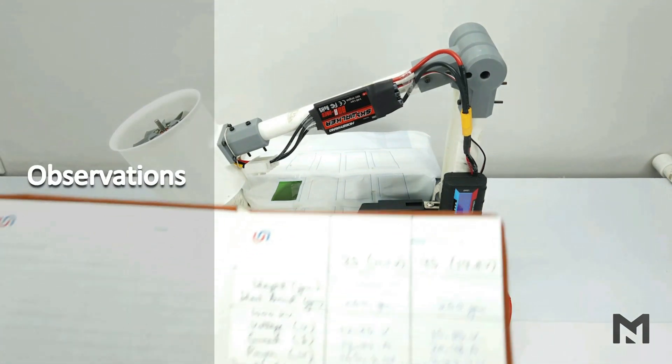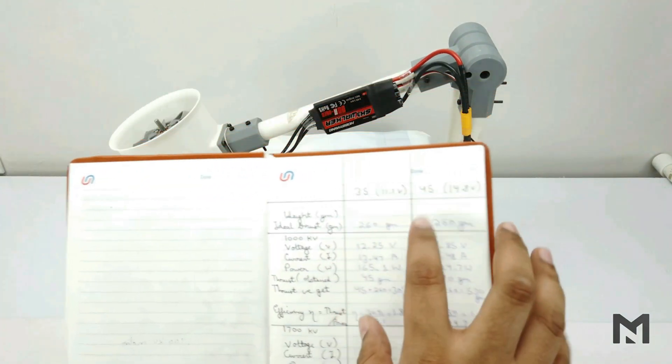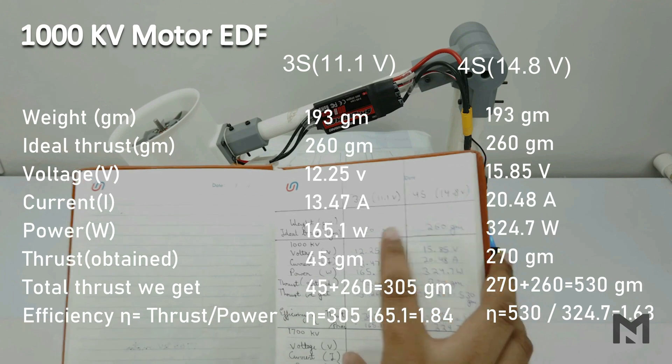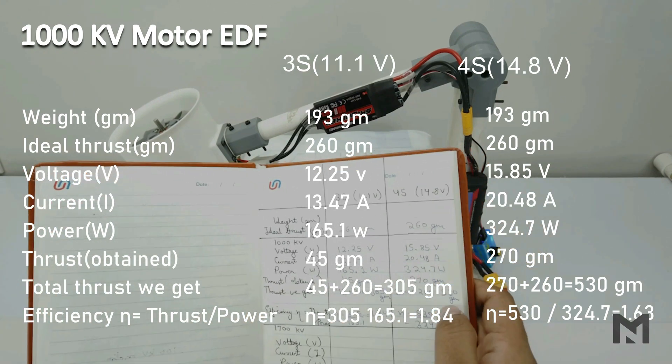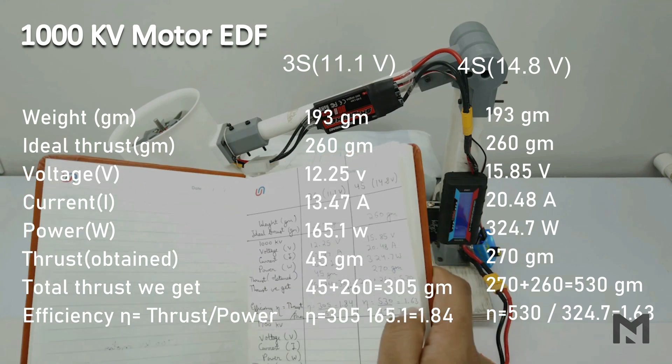So I have done its thrust calculation at 3S and 4S battery. At 3S we get 305 grams at 1.84 efficiency. And at 4S we get 530 grams at 1.63 efficiency.